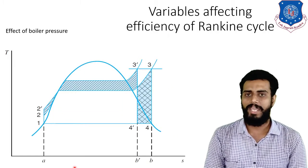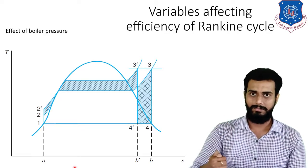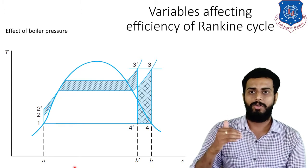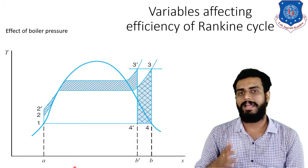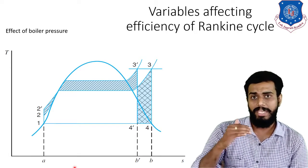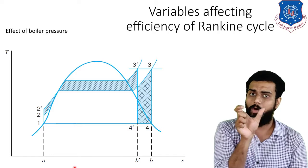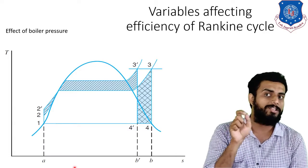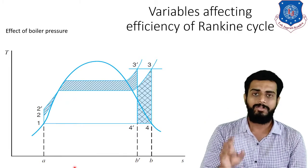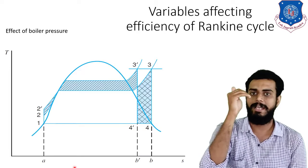The next effect is the effect of boiler pressure. The TS diagram is shown on screen. The original cycle is 1-2-3-4-1. The process corresponding to the boiler is 2 to 3. If we increase the boiler pressure, that is highlighted by 2'-3'. So the modified cycle is represented by 1-2'-3'-4'-1.